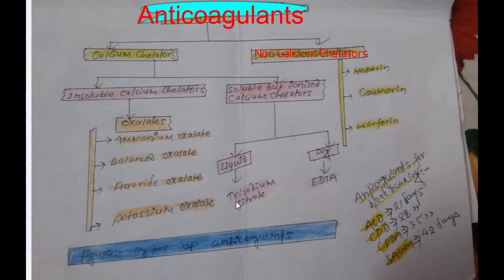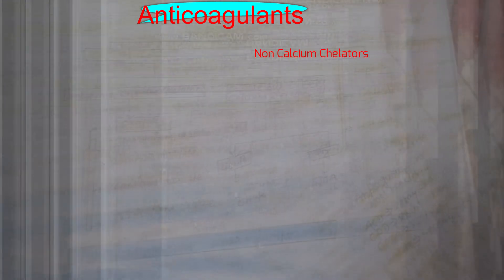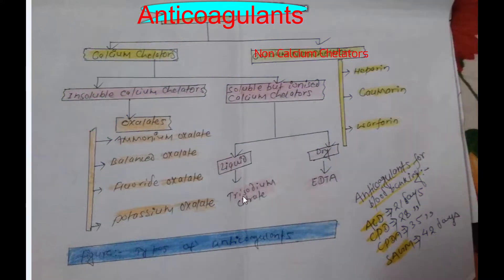Now about trisodium citrate: its concentration is 100 to 120 millimoles per liter, or 3.2 to 3.8 grams per liter. Its usage is for coagulation studies: PT, APTT, fibrin degradation product, and fibrinogen. It is also used for ESR estimation by the Westergren method. The ratio of trisodium citrate in ESR estimation by the Westergren method is 1 to 4.